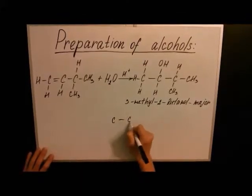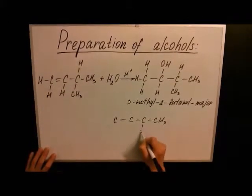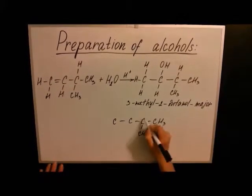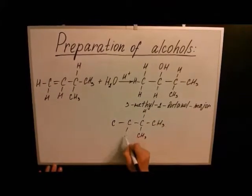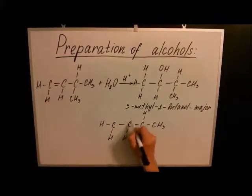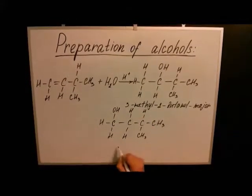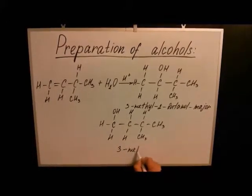To predict the minor product of our hydration reaction, we add the hydrogen atom to the double bonded carbon that originally carried the least hydrogens and add the hydroxide ion to the other double bonded carbon. This makes the minor product of our reaction, 3-methyl-1-butanol.